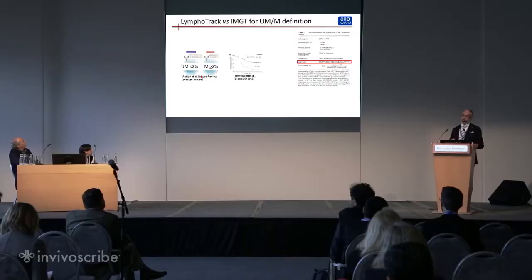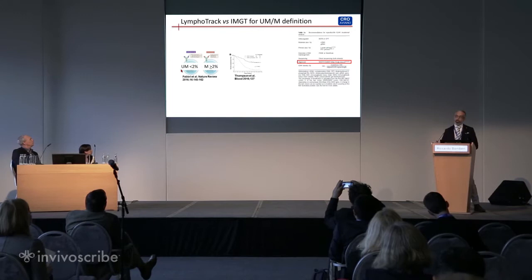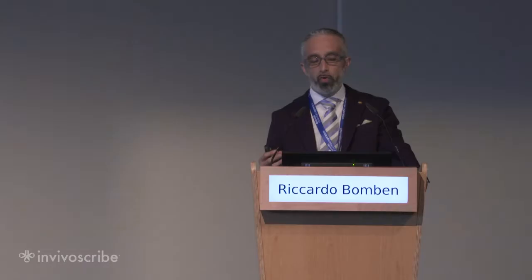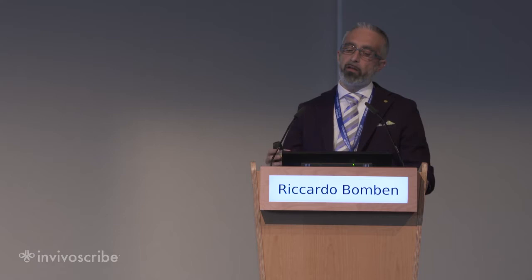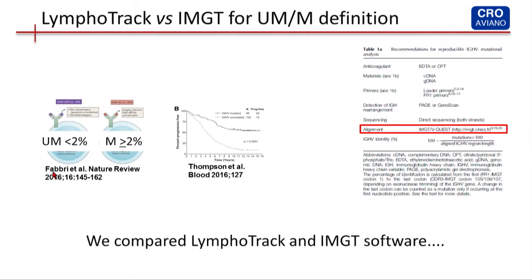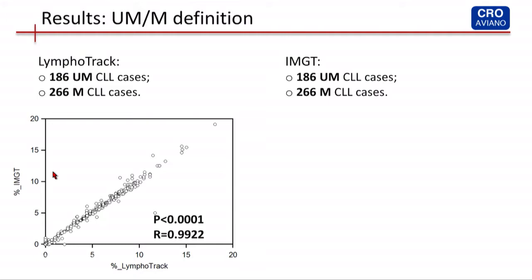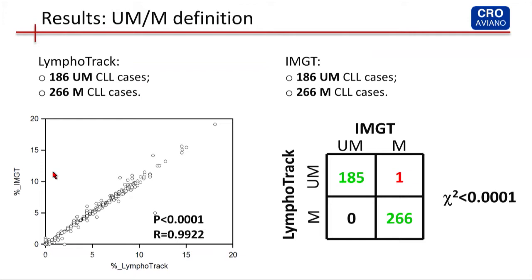It's not only important to identify the IGHV gene — it's important to assign whether a patient is unmutated or mutated. Unmutated patients are those who have less than two percent mutation compared to the closest germline, and mutated patients are those with more than two percent. According to the ERIC recommendation, we use the IMGT database, so we compared the Lymphotrack and IMGT software. We found 186 unmutated CLL and 266 mutated CLL, both for Lymphotrack and IMGT. The graph of the correlation of mutation percentage shows a perfect correlation — I've never seen a graph like that in my research experience.